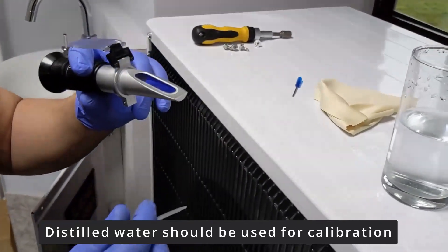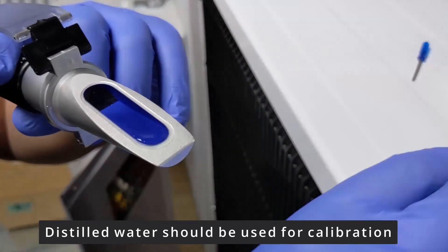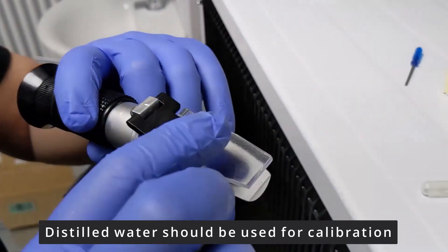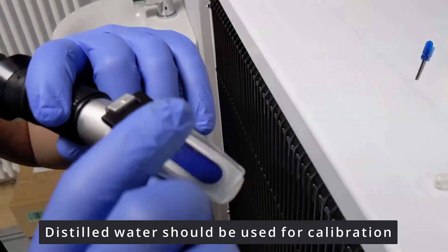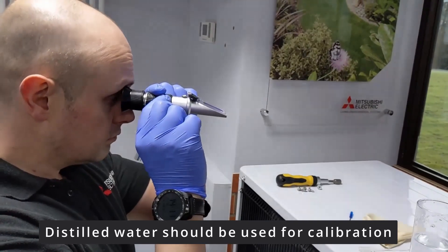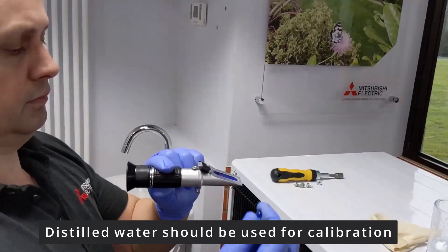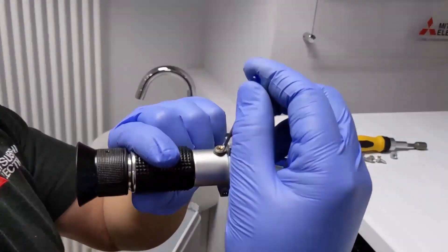So the first thing I want to do is calibrate that refractometer. Let's put a bit of clean water on there and I'll make sure it's going to the correct level and adjust it to suit. I'm just making sure it's in the zero position.